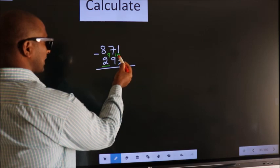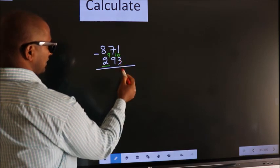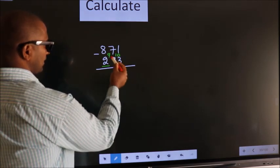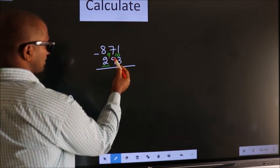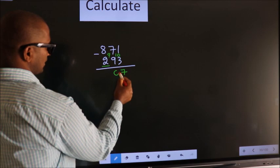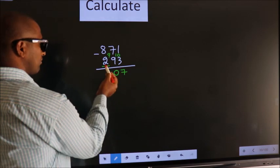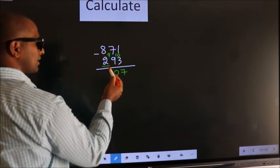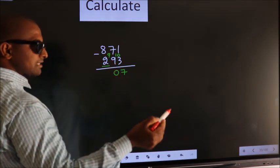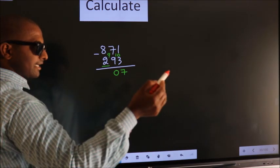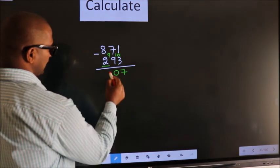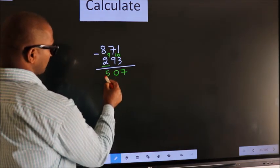Now 10 minus 3, we get 7. Then 9 minus 9 equals 0. For the first digit, you do 8 minus 2, we get 6. Decrease by 1 more, we get 5.